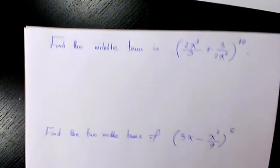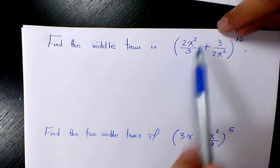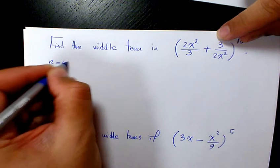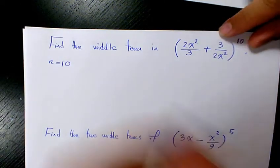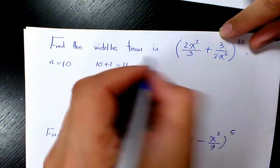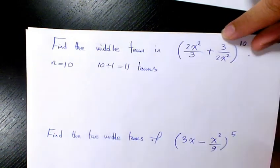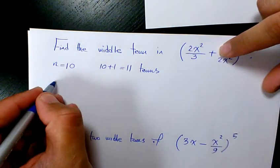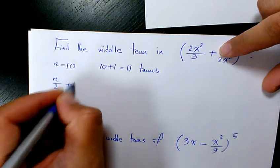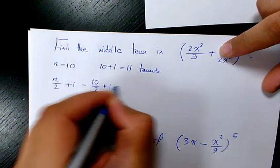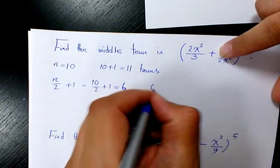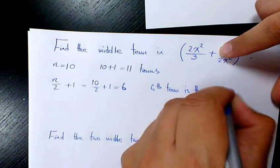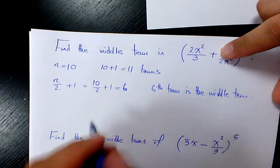The first example says: find the middle term in (2x²/3 + 3/2x²) to the power of 10. So n, the index of this binomial, is 10, which is an even number. So n plus 1 is going to be 11 — that's the number of terms, so we have 11 terms. We have only one middle term, found by n/2 + 1, which is 10/2 + 1 = 6. So the 6th term is the middle term.